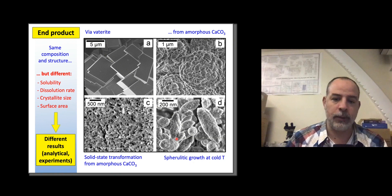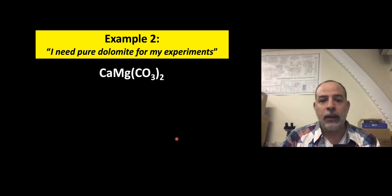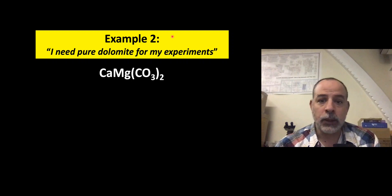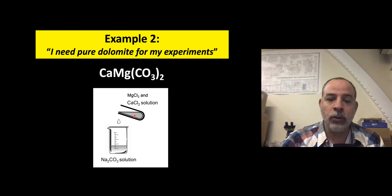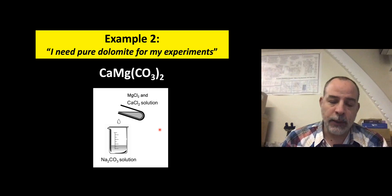Another example: I need pure dolomite for my experiments. Dolomite is the calcium-magnesium carbonate. You might envision this is not very complicated — mix sodium carbonate with magnesium chloride and calcium chloride. In theory, very simple, but you are going to see how complicated it is because there are many variables to consider.